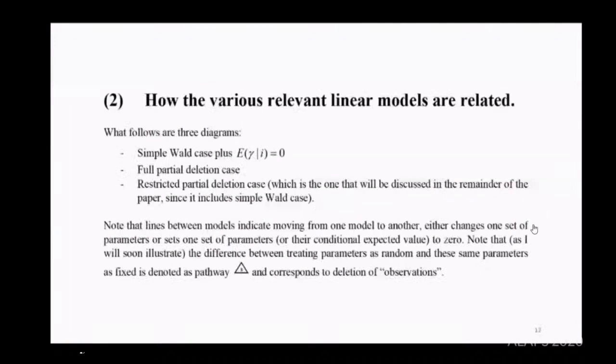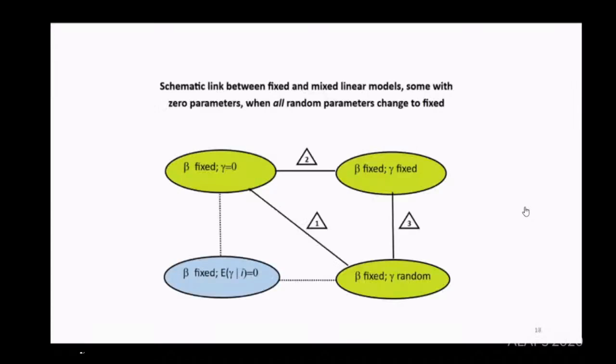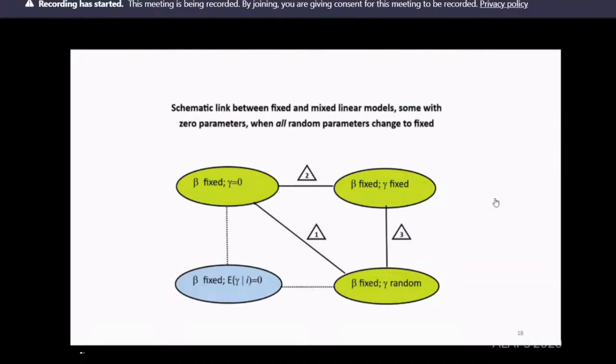I'm going to have three diagrams. One's the simple Wald case plus expectation of gamma given i equals zero. I'm going to look at a full partial deletion case where you set part of gamma equal to zero. Then a subset of those I'll focus on for the rest of the talk. The important point is there's this little triangle three in the first diagram. Bottom right, beta is fixed and gamma is random. Three moves it to beta fixed and gamma fixed. Pathways one and two go from those options to beta fixed, gamma equals zero. But the difference between them is triangle number three. A lot of the talk will focus on this pathway three.